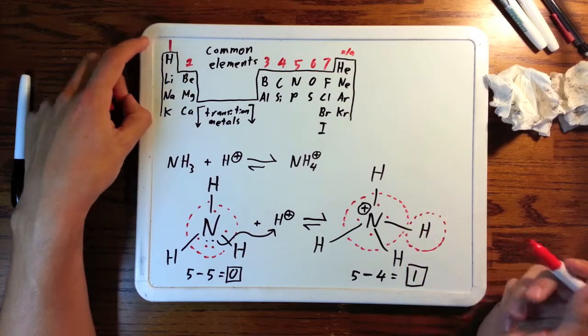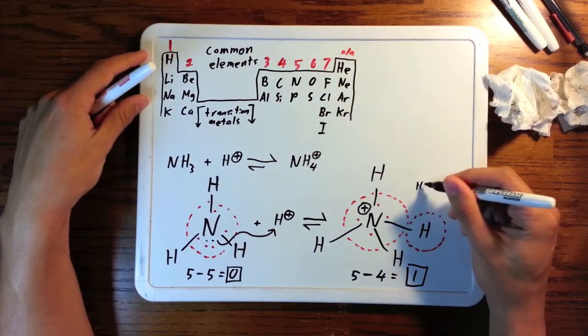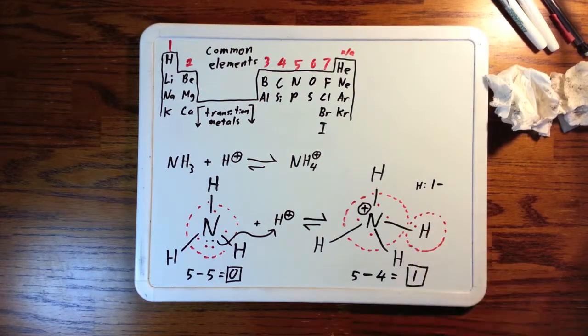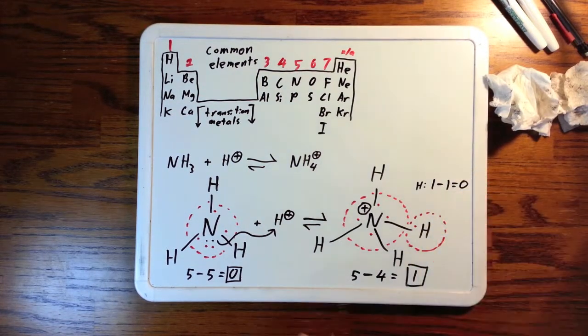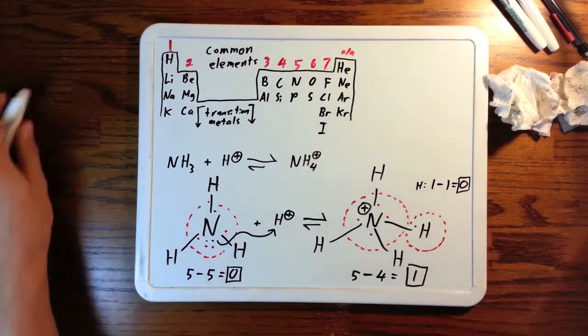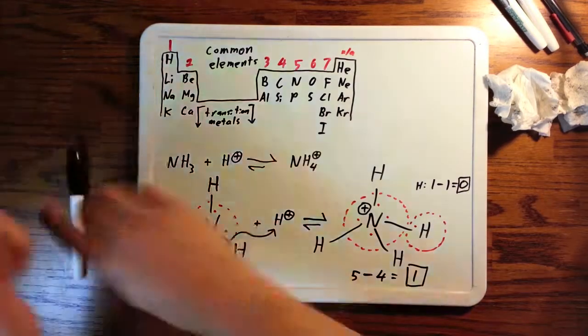Now let's look at one of the hydrogens around this. Hydrogen's number from the periodic table, the number of electrons around it that would make it happy, is one. It has one bond around it, so one minus one is zero. This hydrogen's formal charge is zero, and of course they're all equivalent.